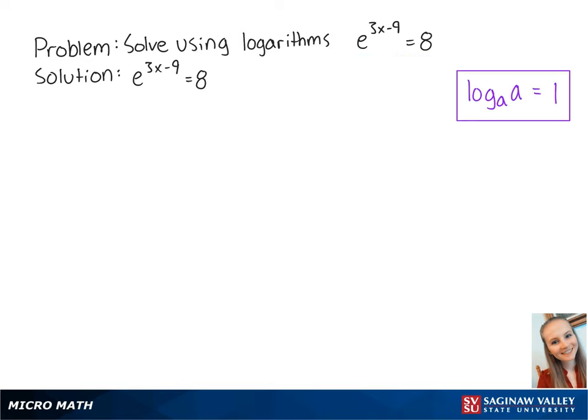Using the following property, we're going to take the log of base e, which is the ln. So now we have the ln of e to the 3x minus 9 equals the ln of 8.